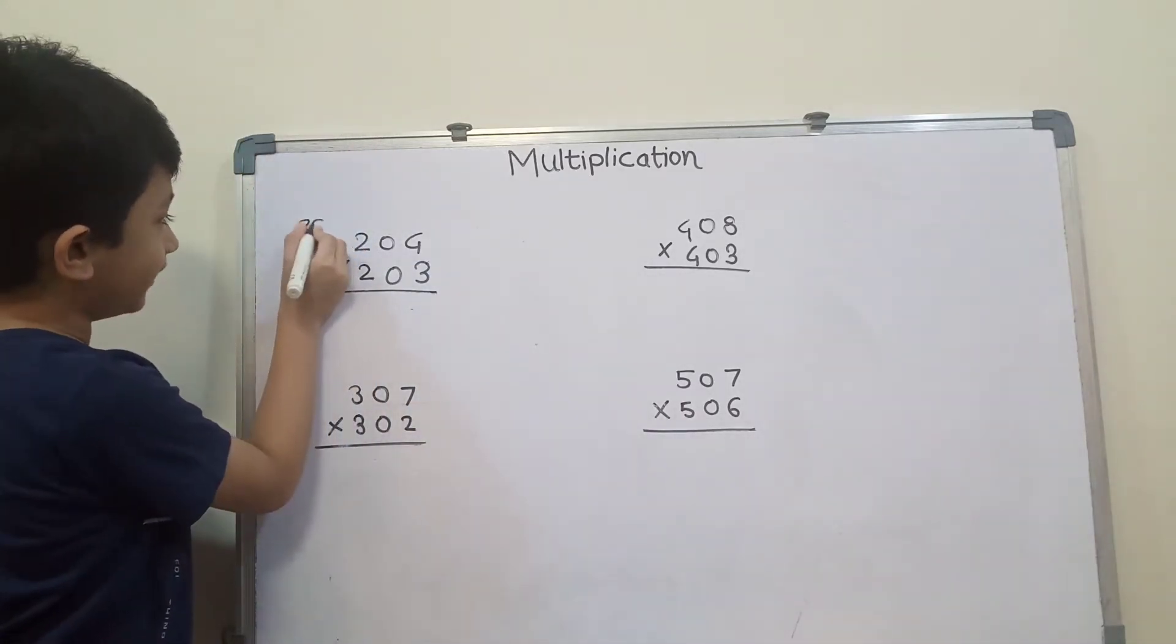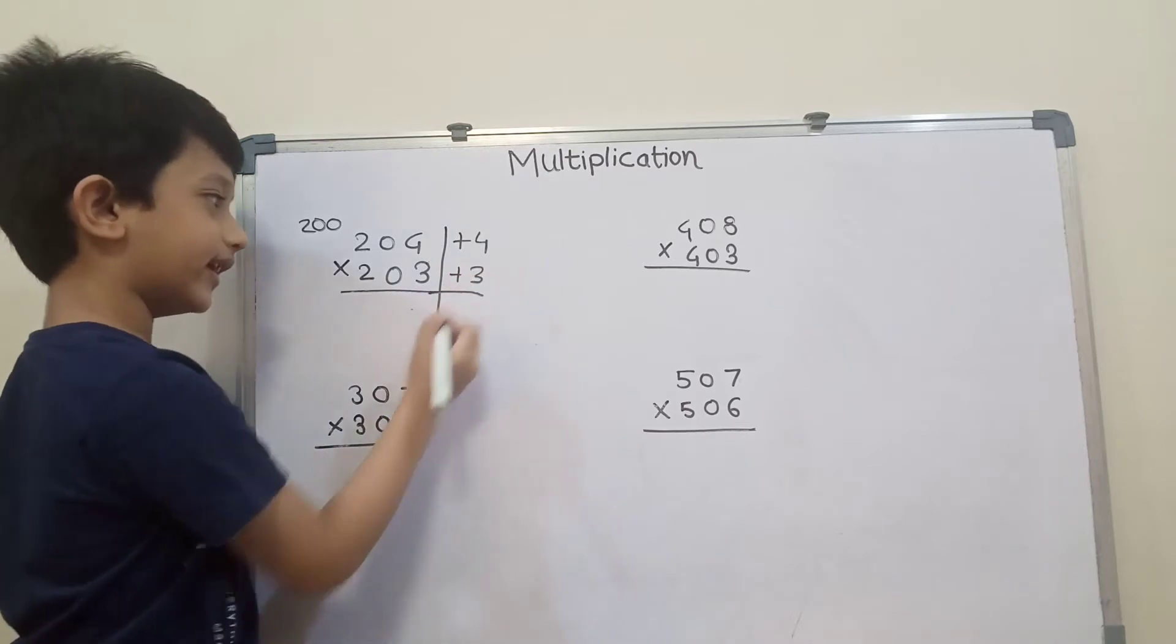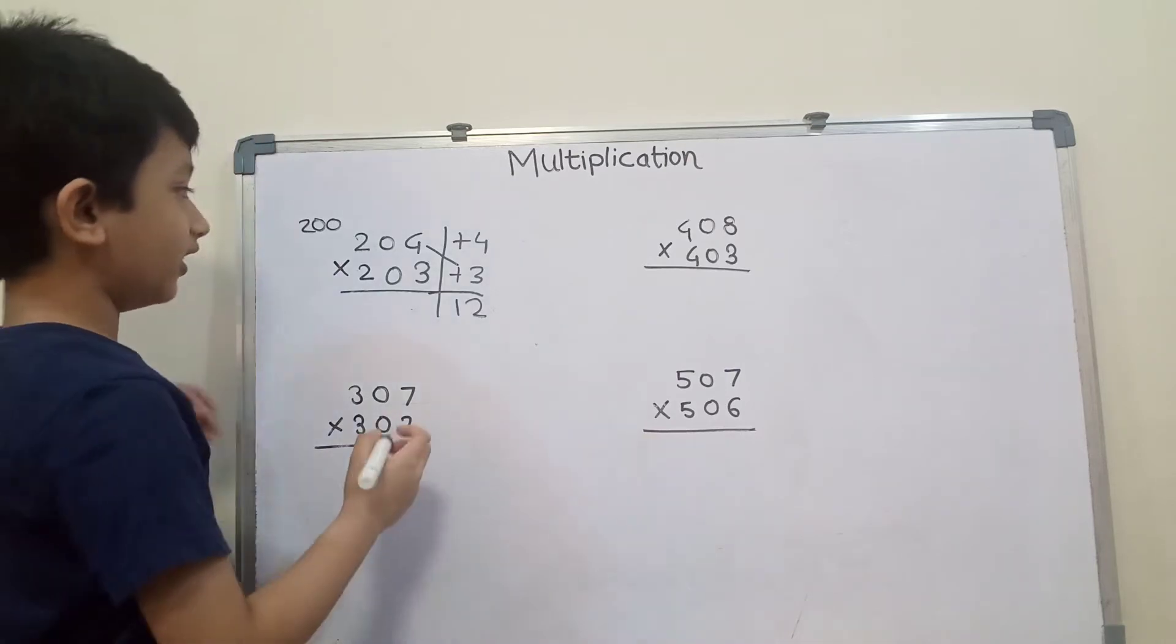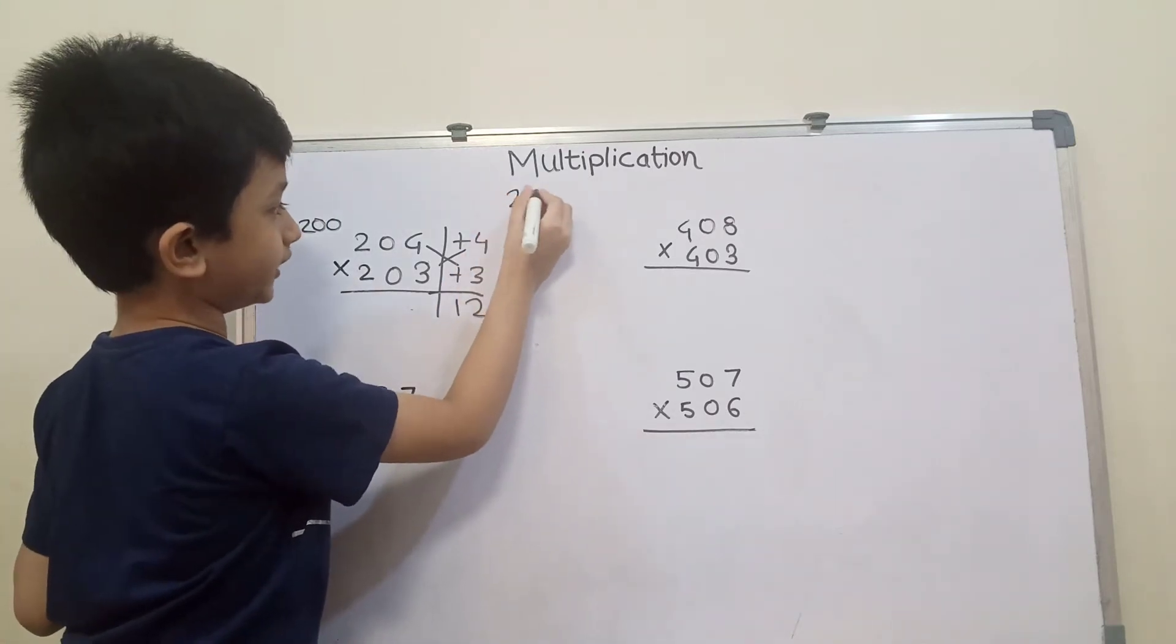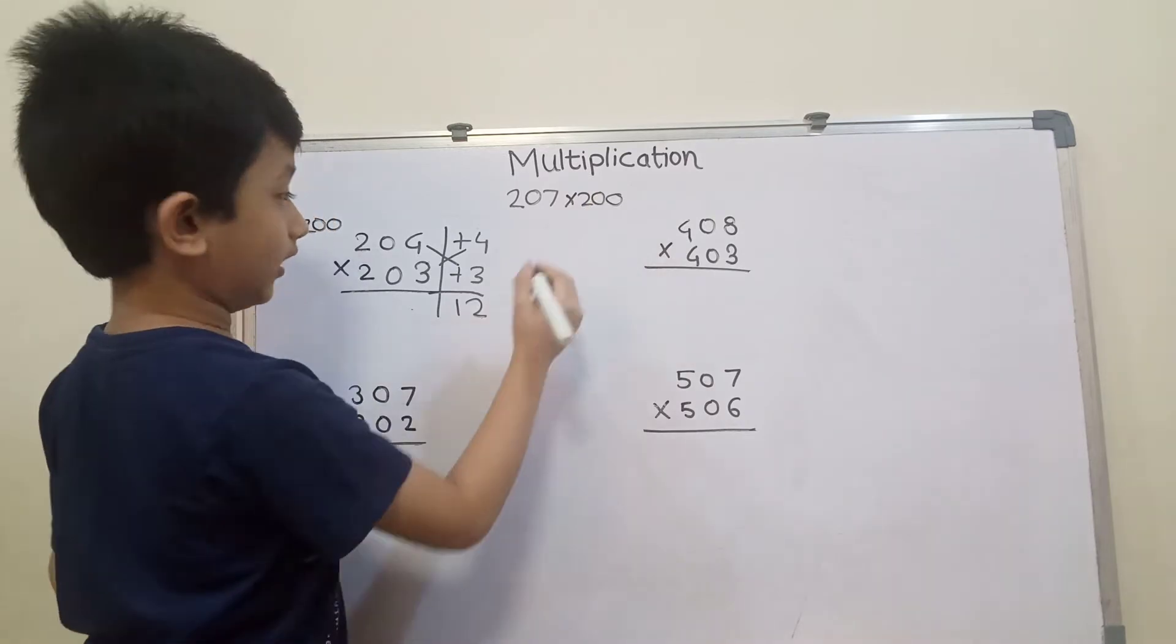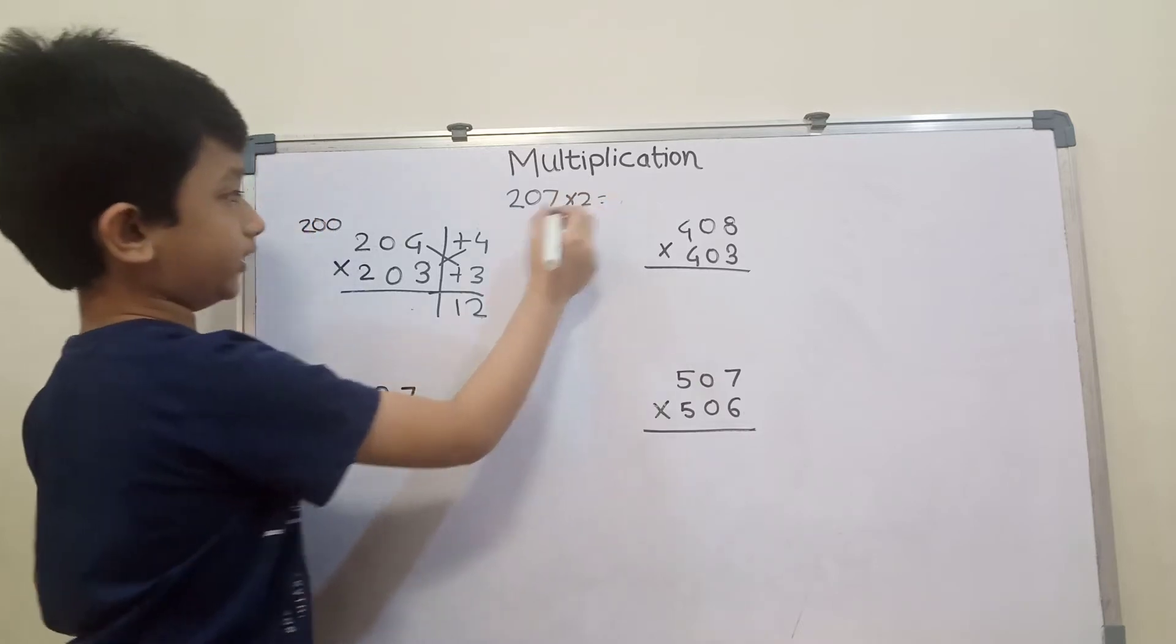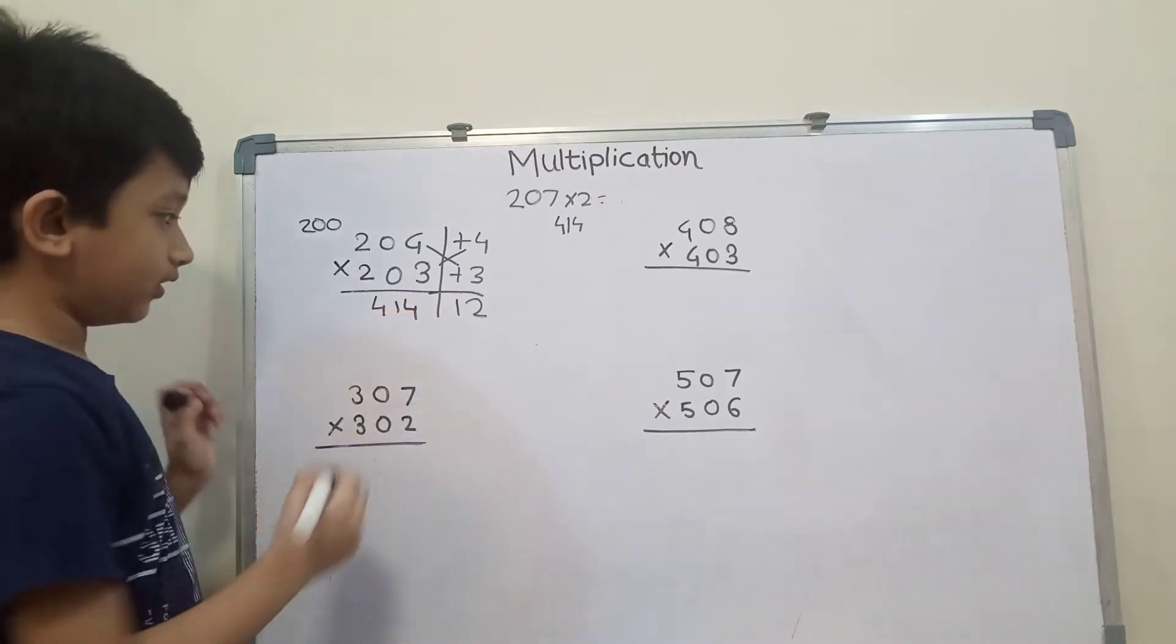So this equation has base 200. It's 200 plus 4 here and plus 3 here. 4 times 3 is 12. Then 204 plus 3 equals 207, and 203 plus 4 also equals 207. So 207, with base 200. 2 into 2 is 4. So the answer is 41,412.